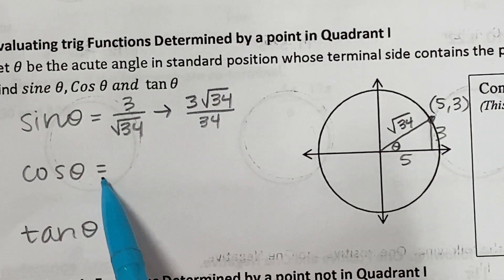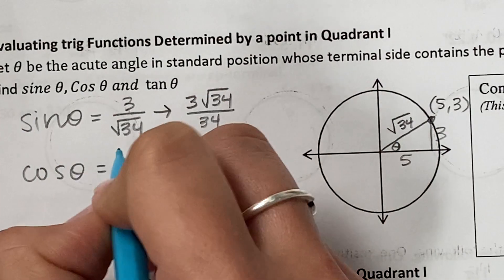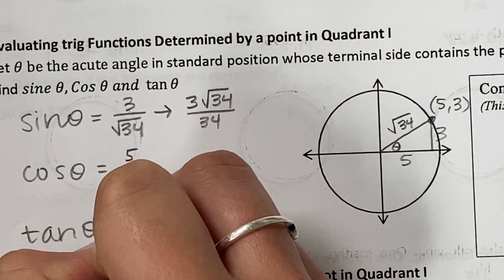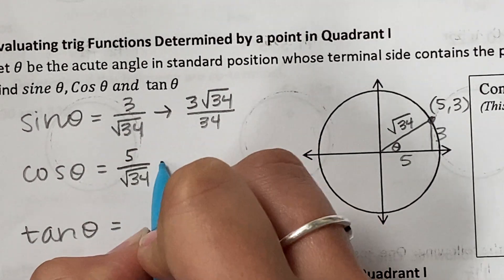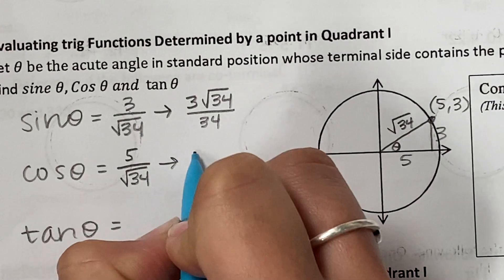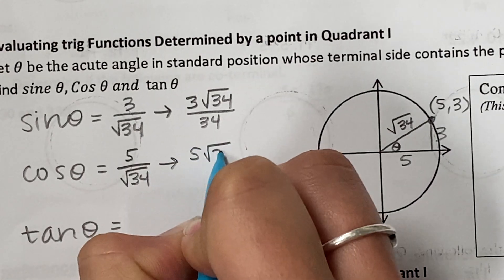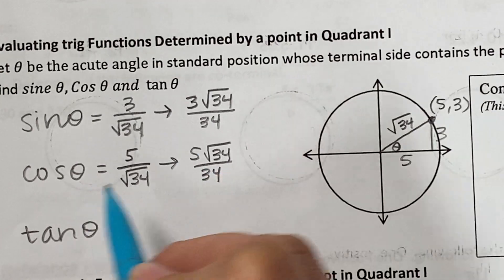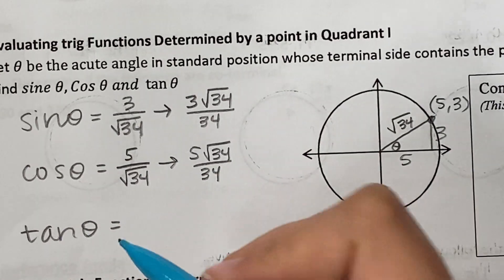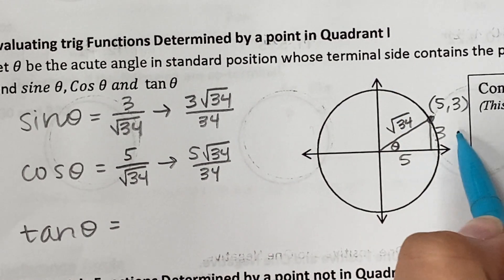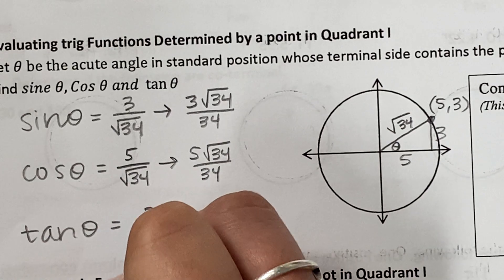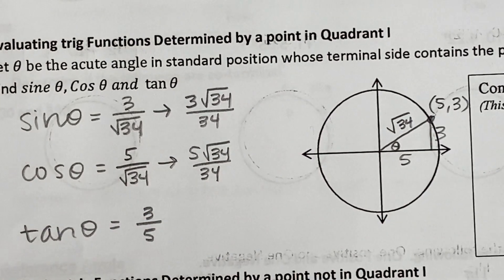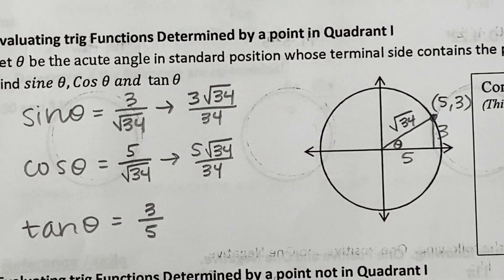For cosine: adjacent over hypotenuse is 5 over root 34. Same situation — we need to rationalize. That gives us 5 root 34 over 34, and there's cosine. Tangent is opposite over adjacent, so 3 over 5. That doesn't simplify, so we leave it as 3 over 5.